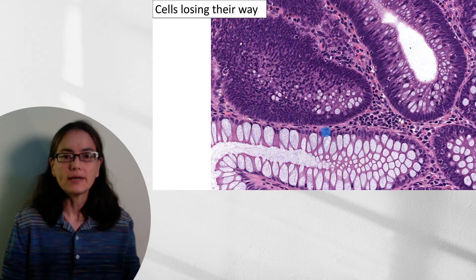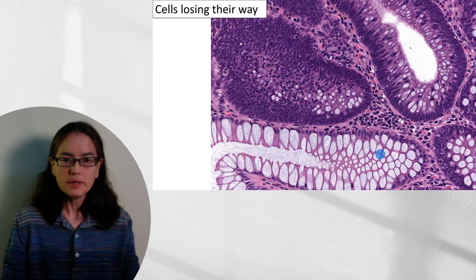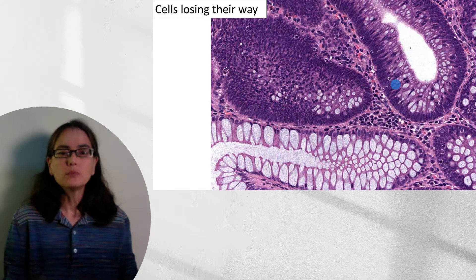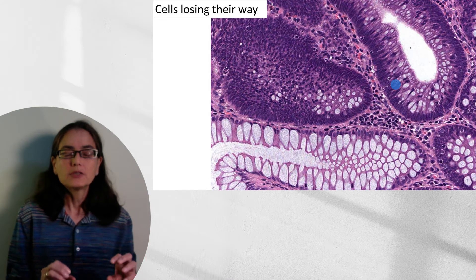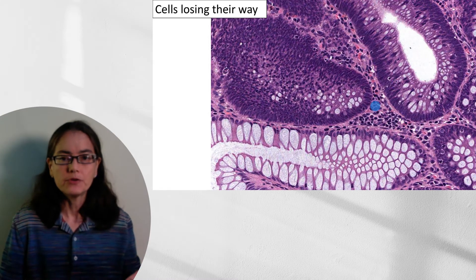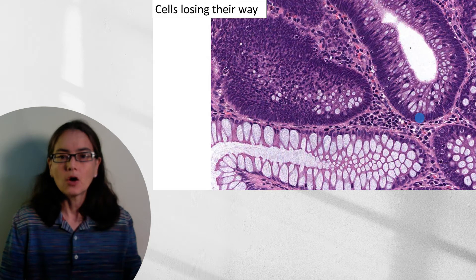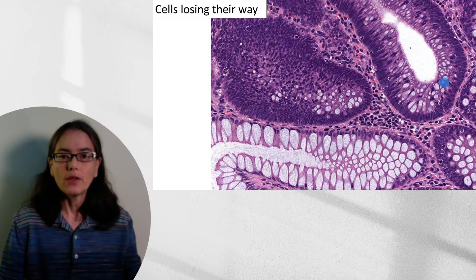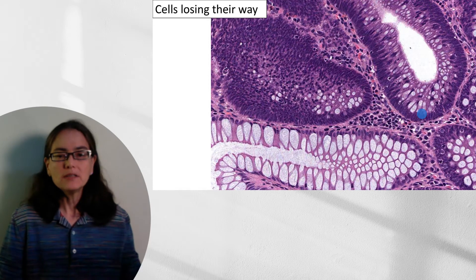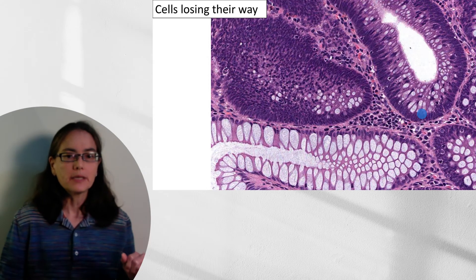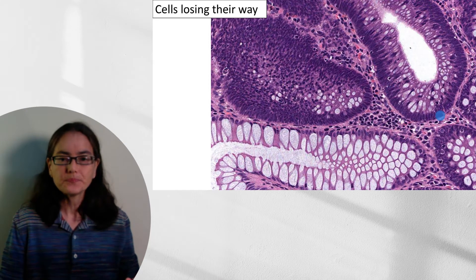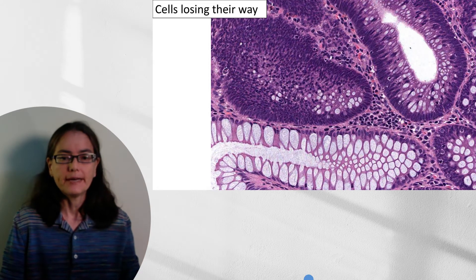The well-behaved cells have a nice basal nucleus, maintaining their polarity, and are happily making mucin. Compare that to these dysplastic areas — this is dysplasia, not frank malignancy. It's the first step before we get to pleomorphism. These cells are not making nearly as much mucin, the nuclei are enlarged and dark, and some have left the basal surface and are up closer to the lumen. We'll also typically see enhanced mitotic activity. These cells are losing their way but haven't gone completely malignant — they're still bounded by the basement membrane.